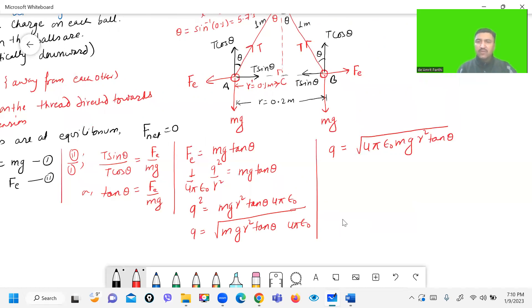Let's use the values. 4 pi epsilon naught, this is equals to 1 over 9 into 10 to the power 9. Mass 10 milligram, 10 into 10 to the power minus 6. Let's make use of g, 10. And here R is 0.1 and tan theta, tan of 5.73 degrees.